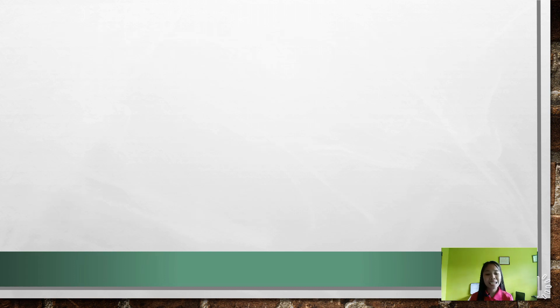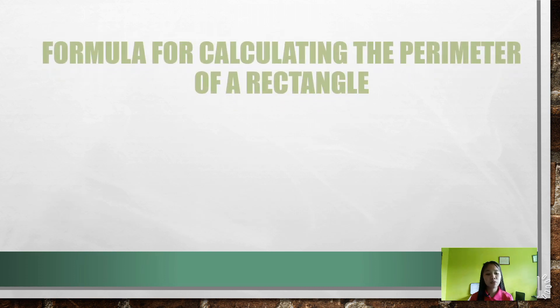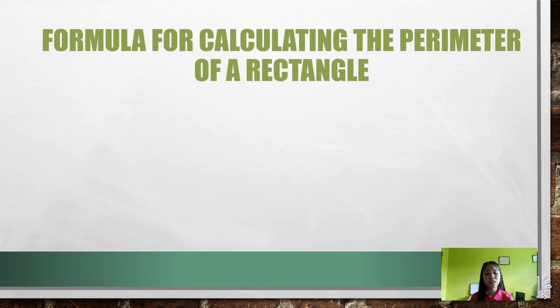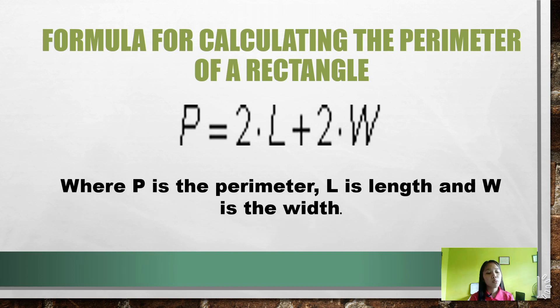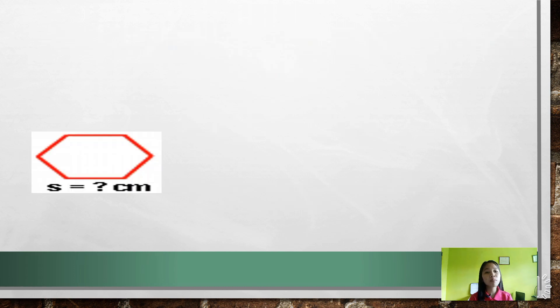Notice that we get the same value for our answer. The second solution is most widely found in example number two. In truth, the following formula for calculating the perimeter of a rectangle is widely used in mathematics. We have P = 2L + 2W, where P is the perimeter, L is the length, and W is the width.